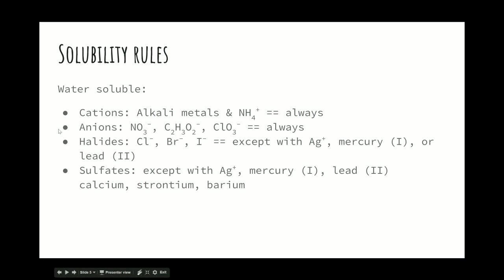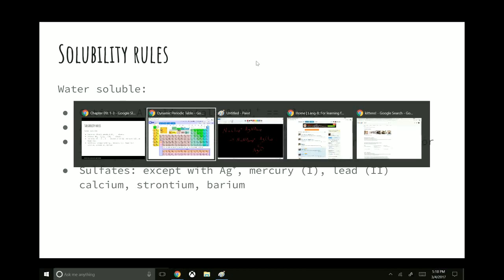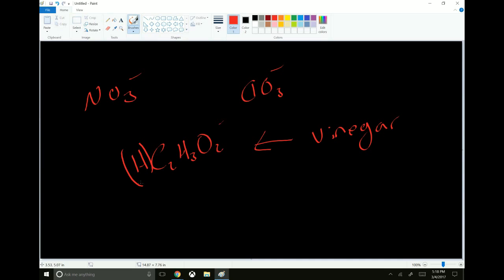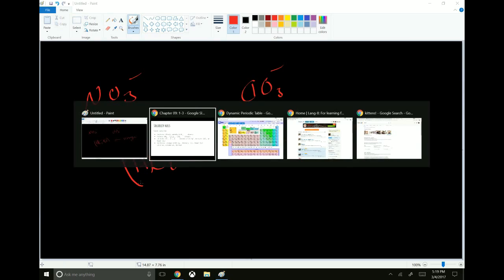As for anions, these three you pretty much just have to memorize. Nitrate, NO3-, acetate, C2H3O2-, and chlorate, ClO3-. Those you pretty much just have to remember. Acetate, C2H3O2 1-. Just think vinegar. Because HC2H3O2, vinegar, is acetic acid. So if you think vinegar, think salad. Vinegar and oil don't mix. Vinegar is soluble in water because it's not soluble in oil. Maybe that'll help. I don't know. You may not like salads. I know I don't. But acetate is just one of those things that's always soluble.